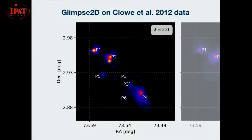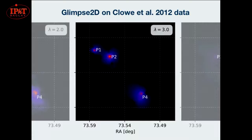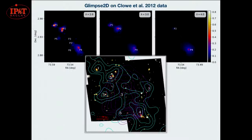Here are the actual results for lambda equals two of running Glimpse on the Clo 2012 data. Using the same numbering system from their papers, we essentially see P1, P2, and P4 — the same structures in the same places. P3 was the original place of the dark peak, and P3-prime is where it moved to, and in neither of those places do we really see any structure — neither did they. As we raise lambda to three, we only get the most significant peaks coming out, and same for four. Comparing all three lambda levels with their original, we see good agreement — in other words, we don't detect the dark peak, just like they didn't.